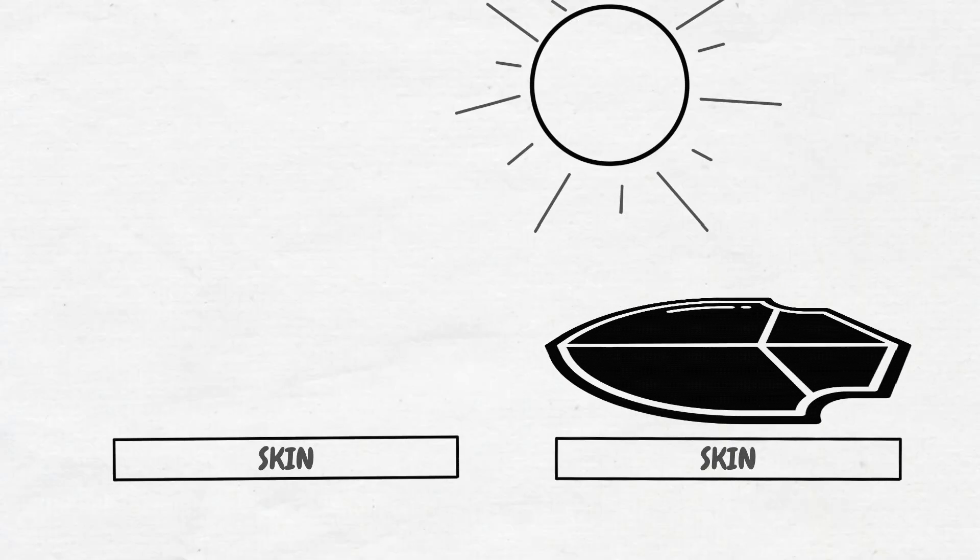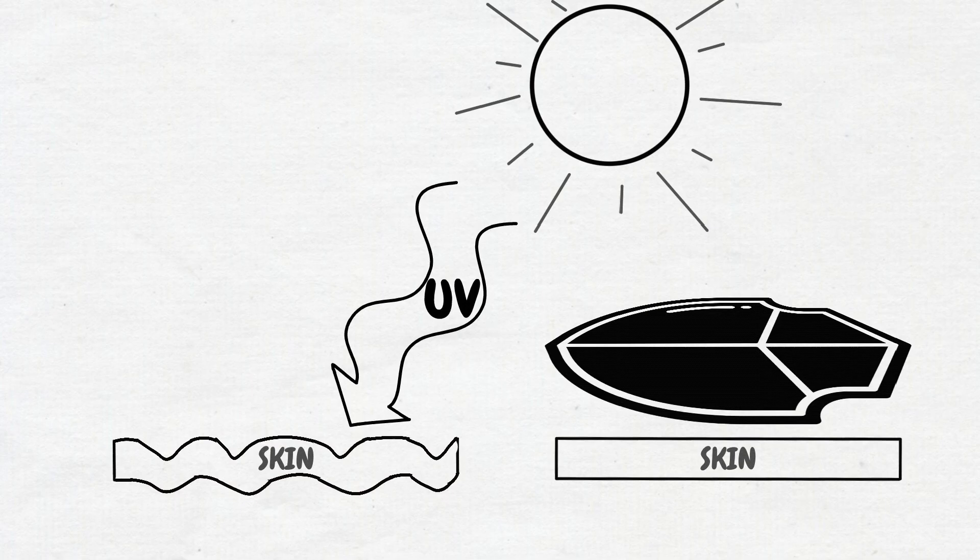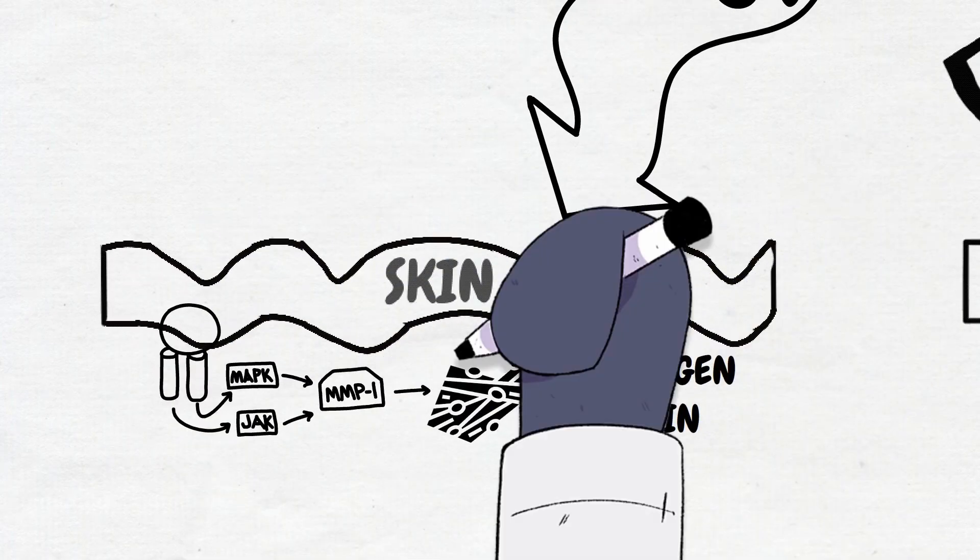Sun protection is one of the best ways to protect your skin from aging. Ultraviolet, or UV, rays from the sun initiate complicated molecular pathways in your skin that eventually break down collagen and elastin,